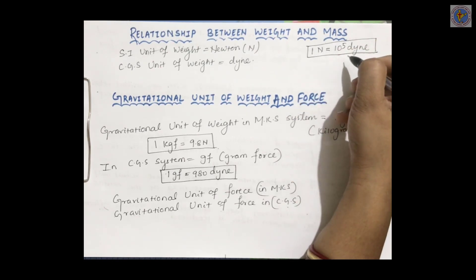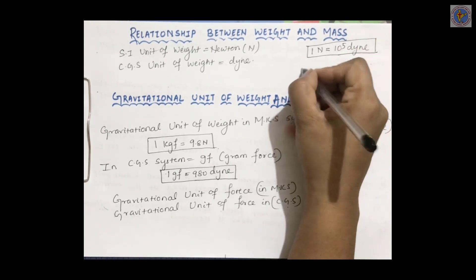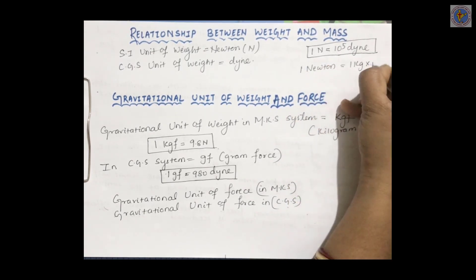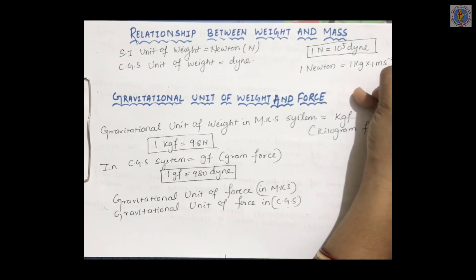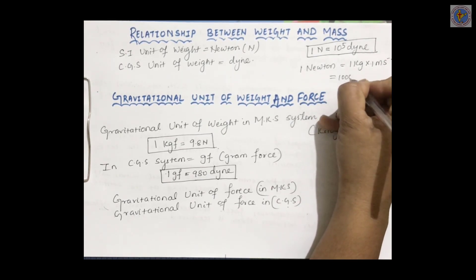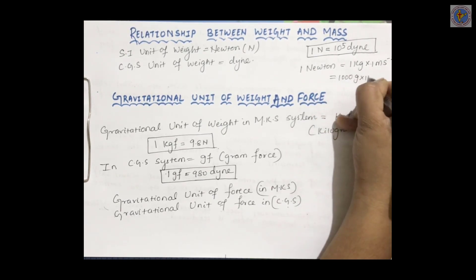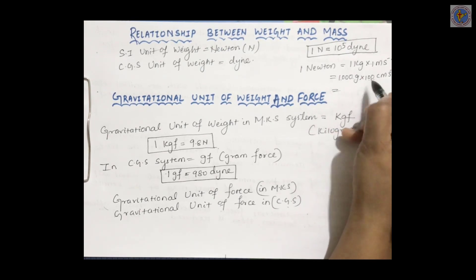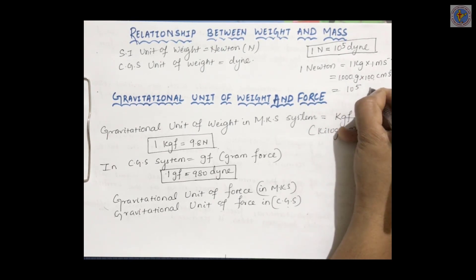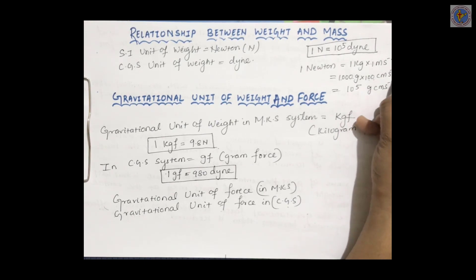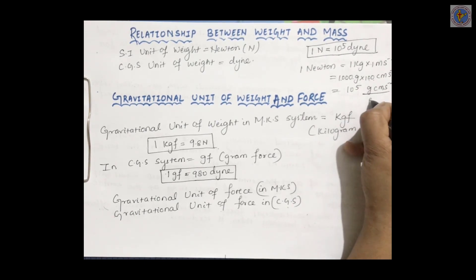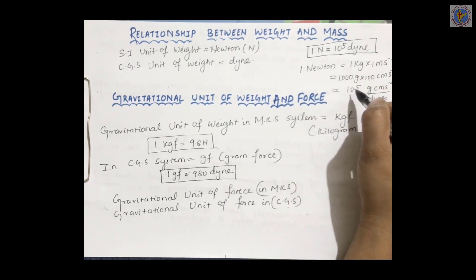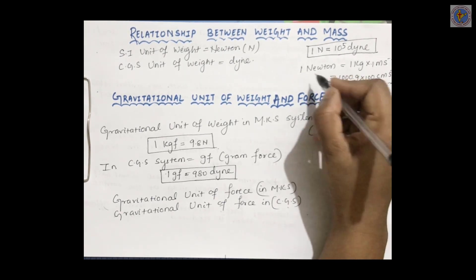1 Newton is equal to 1 kg into 1 meter per second square. Or we can write 1000 gram into 100 centimeter per second square, which gives 10 to the power 5 gram centimeter per second square. This is nothing but Dyne (D-Y-N-E). So we can write: 1 Newton is equal to 10 to the power 5 Dyne.